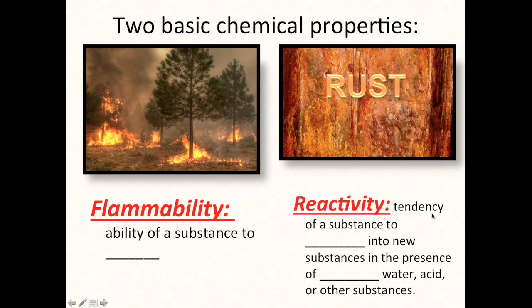The two basic chemical properties you need to know are flammability and reactivity. Flammability is the ability of a substance to burn. Here's a forest fire burning. Reactivity is the tendency of a substance to change into new substances in the presence, usually, of oxygen, but could also be water or acid or other substances it's reacting with. Rust is basically a slow burn of metal. It's an oxidation process, just like the wood is being oxidized on the left as it burns. The metal on the right is being oxidized by rust, only much more slowly.